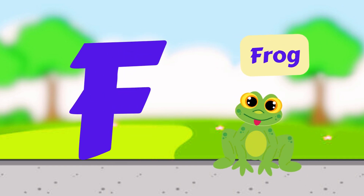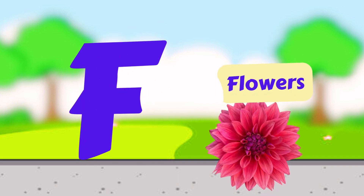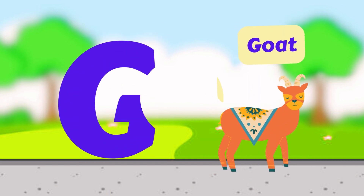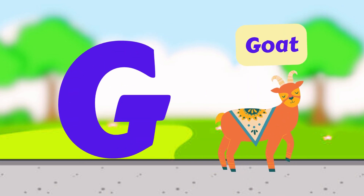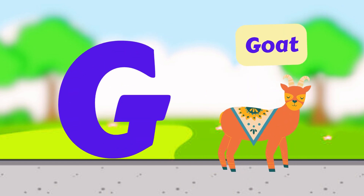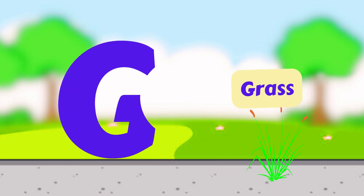F is for Frog. F, F, Frog. F is for Flower. F, F, Flower. G is for Goat. G, G, Goat. G is for Grass. G, G, Grass.